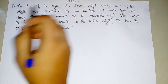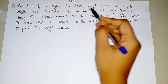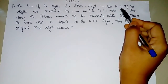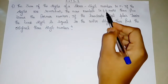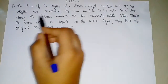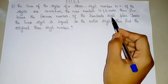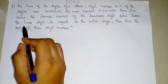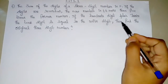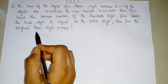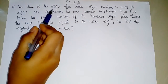Exercise 3.1. The sum of the digits of a 3-digit number is 11. If the digits are reversed, the new number is 46 more than 5 times the former number. If the 100th digit plus twice the 10th digit is equal to the unit digit, then find the original 3-digit number.